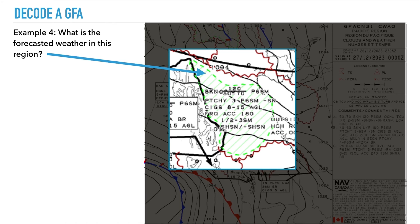IFR ceilings are between 800 to 1,500 feet above ground level — note that the previous altitudes were above sea level. We also have frequent alto cumulus castellanus clouds at 18,000 feet, with between a half to three statute miles visibility within those clouds, and moderate to light snow showers. There's quite a bit happening in that same region.